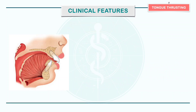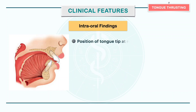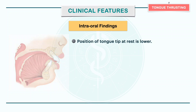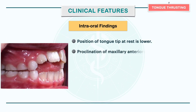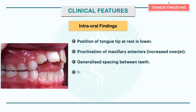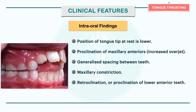Intraorally, we will find a lower positioning of the tongue tip at rest, proclination of maxillary anteriors, generalized spacing between teeth and maxillary contraction. The mandibular arch will present retroclination or proclination of lower anterior teeth depending on the type of tongue thrust. And when we look at the inter-arch relationship, there will be anterior or posterior open bite depending on the type of tongue thrust.